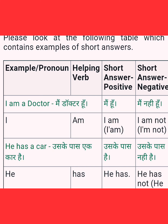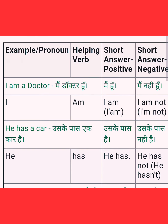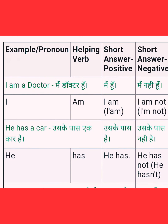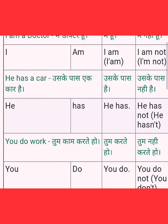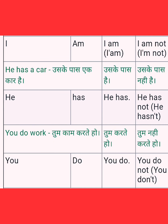The short answer in positive form is 'I am', and the short answer in negative form is 'I am not', or in short form 'I'm not'. Next example: 'He has a car' — us ke paas ek car hai.